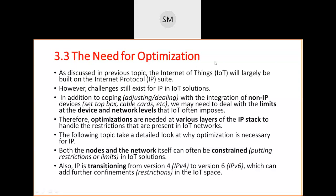Today we move to the next topic: the need for optimization. Why do we need to optimize the IoT network and devices? The main optimization focus is on IP. As previously discussed, IoT is completely built on IP — IoT is completely dependent on IP, which is a network layer protocol.